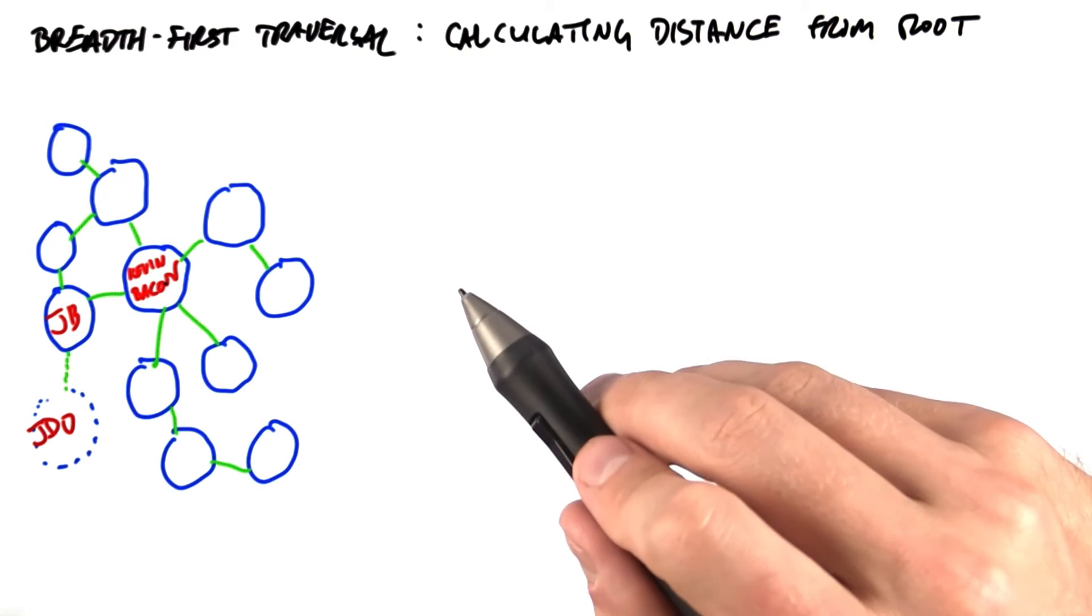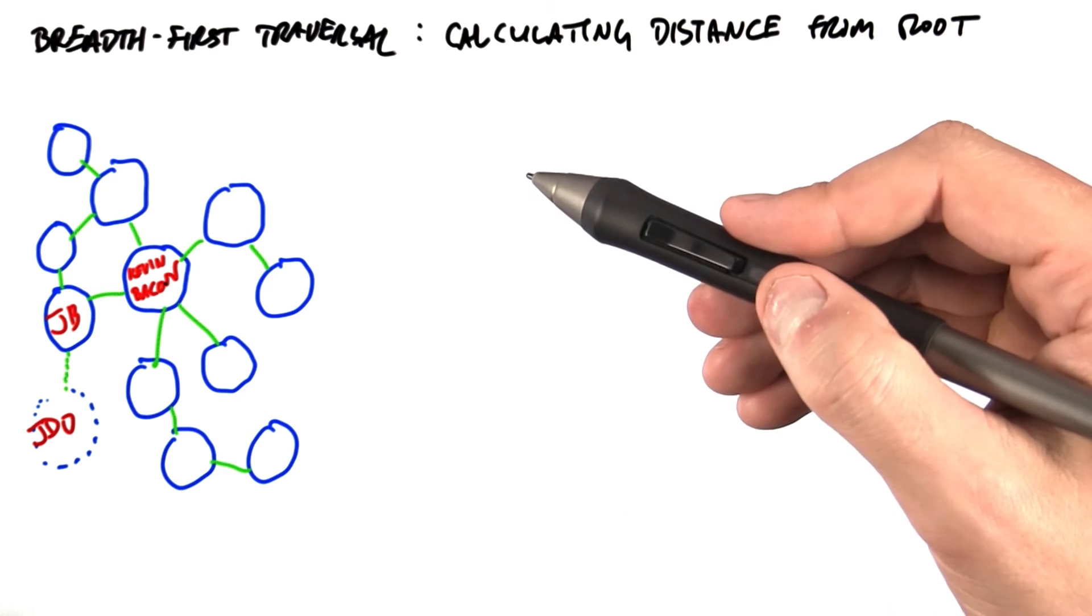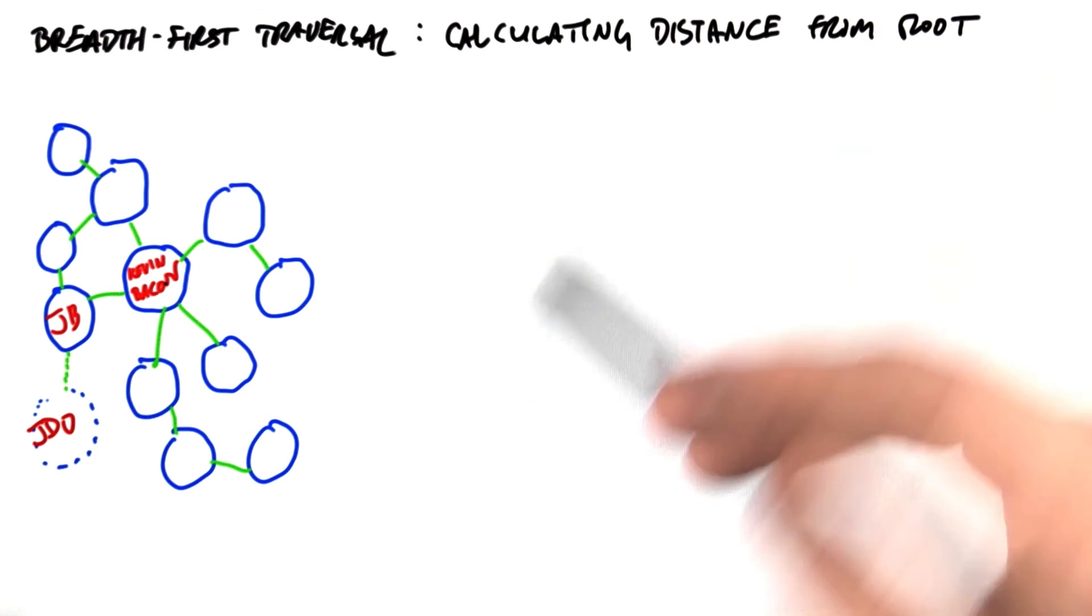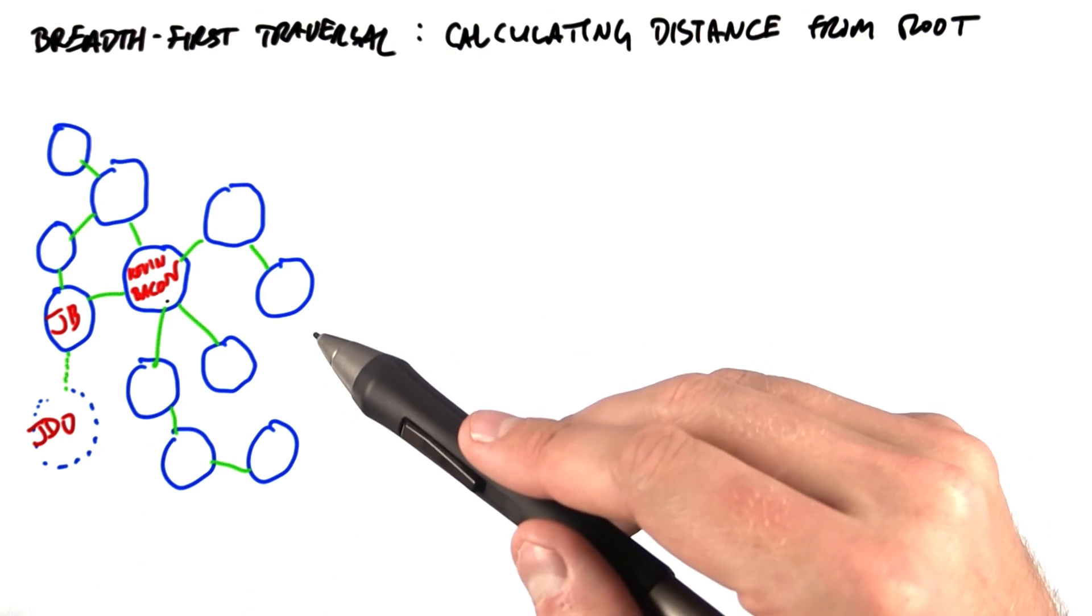We could generate the Bacon numbers for all movie actors from a graph that records who appeared in movies together, and we could do this with a breadth-first traversal that begins at Kevin Bacon and calculates depth for each vertex, for each actor in the graph.